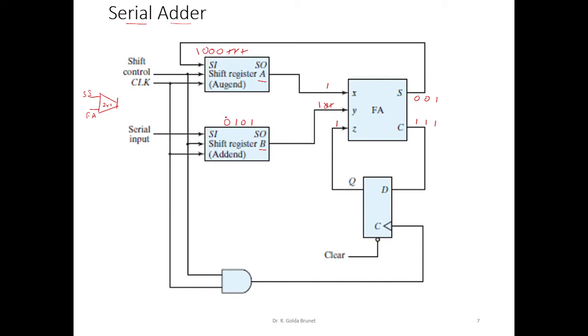And finally, this 0 will appear here and this 0 will appear here. And this carry bit will be 1. So 0 plus 0 plus 1, the sum is 1, carry is 0. This 1 will be appearing here and this will be pushed out.